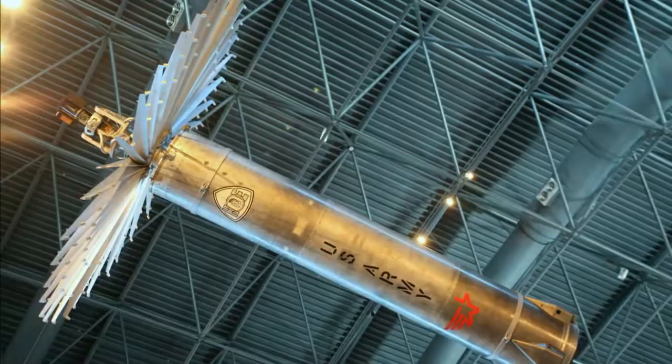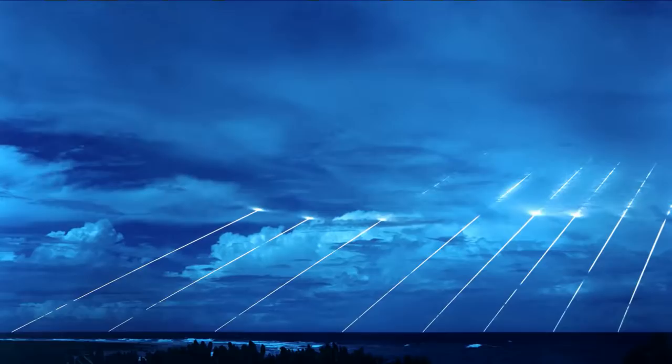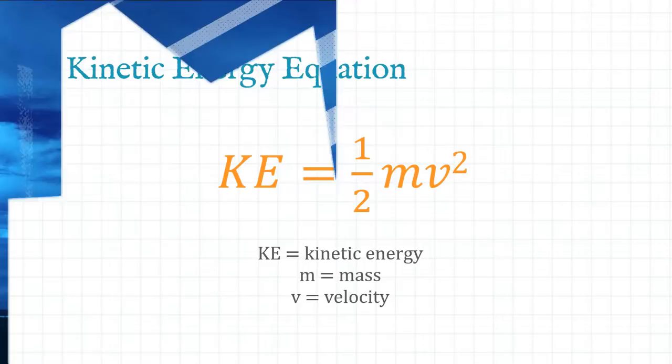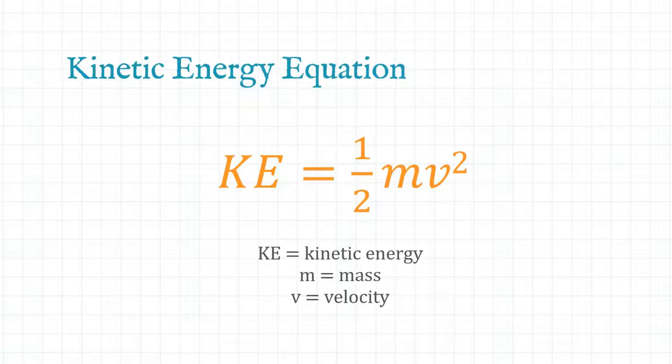The idea is that your projectile or ammunition is fired at some hypervelocity towards your target and kinetic energy is the weapon itself. To calculate kinetic energy we use this equation which is half times the mass times the velocity squared. So as you can see increasing the velocity has a much bigger impact than increasing the mass.